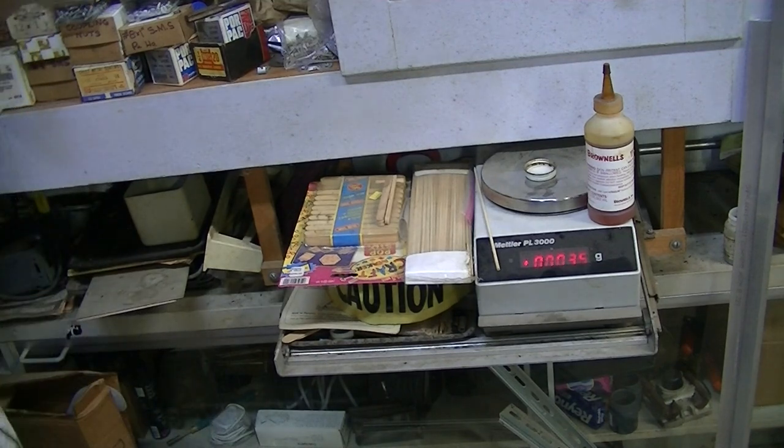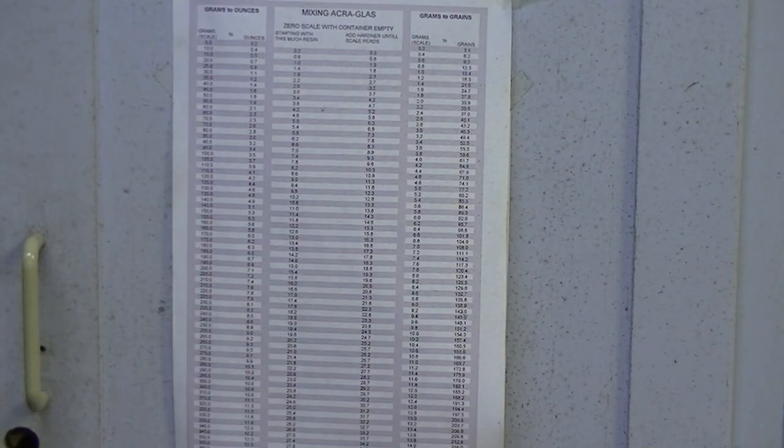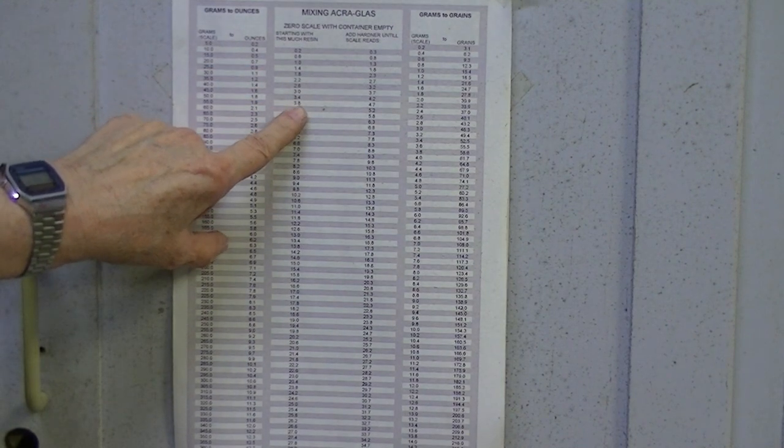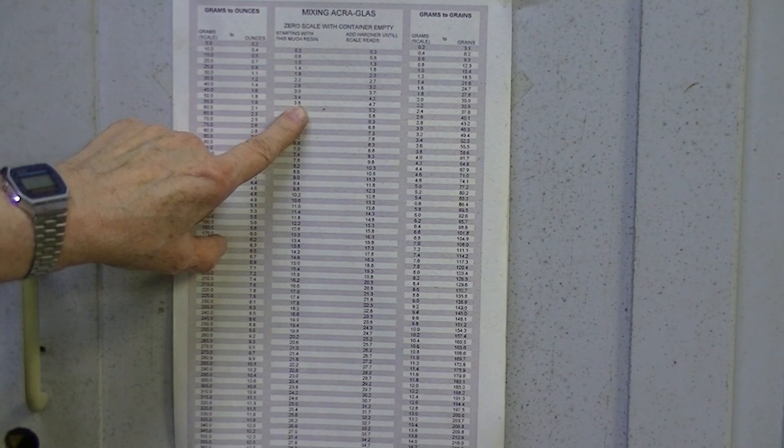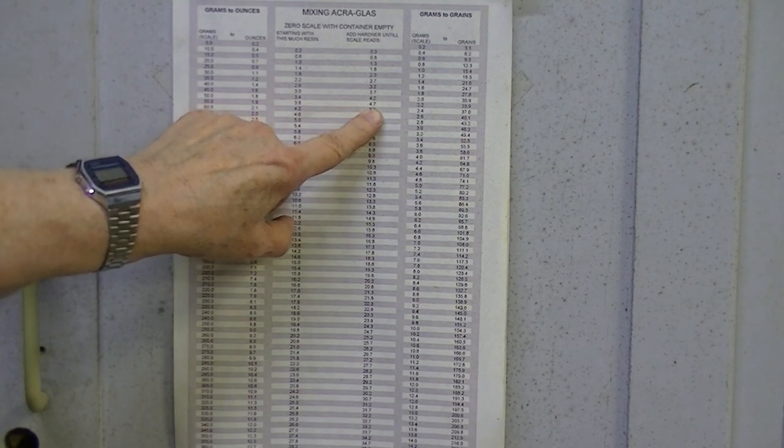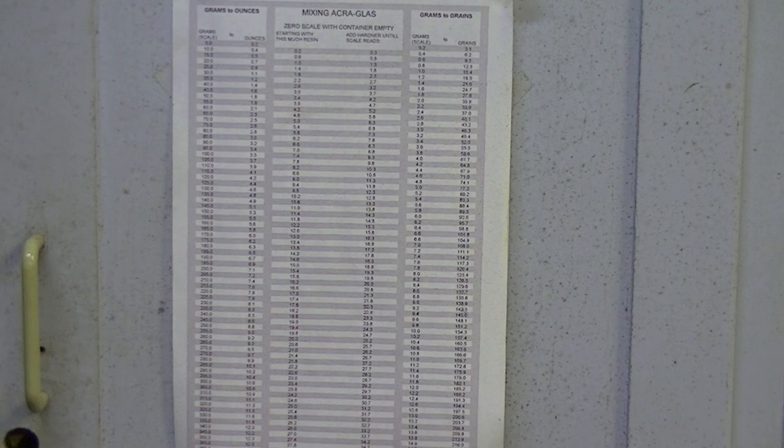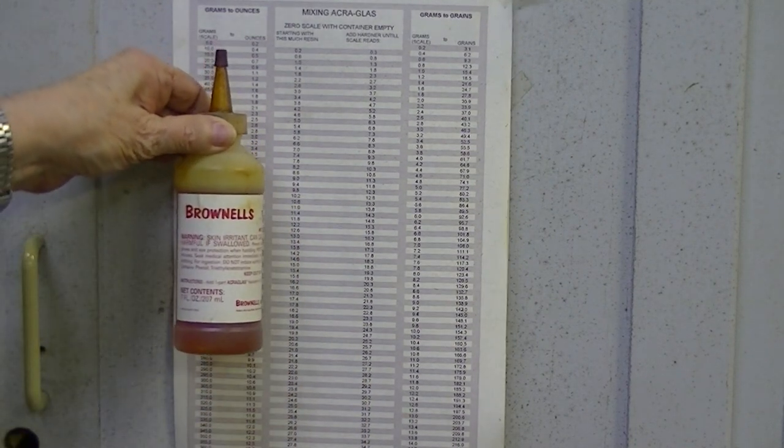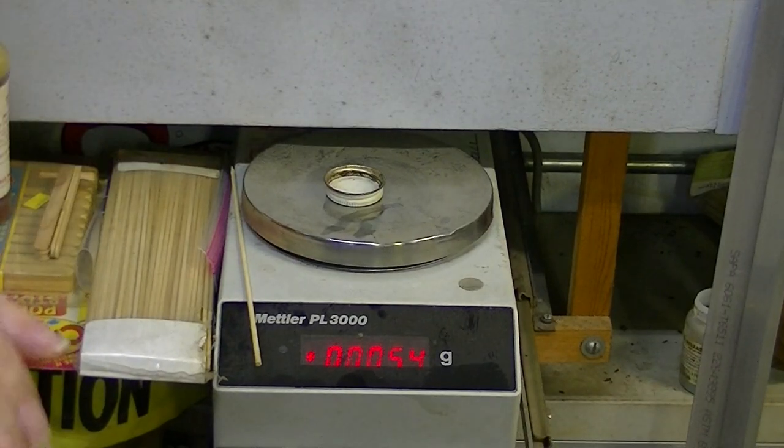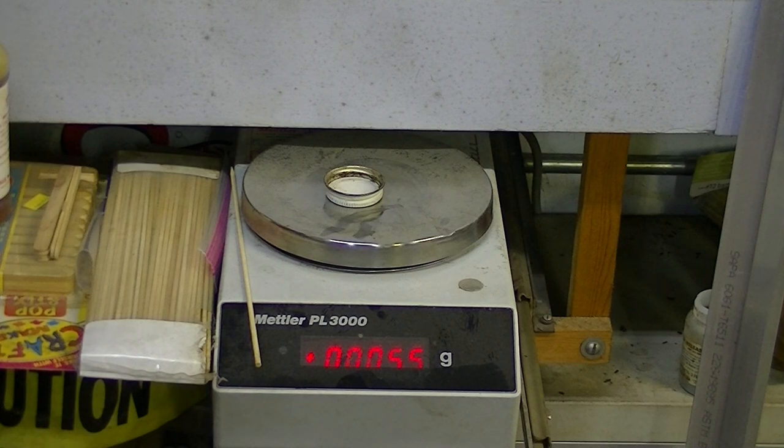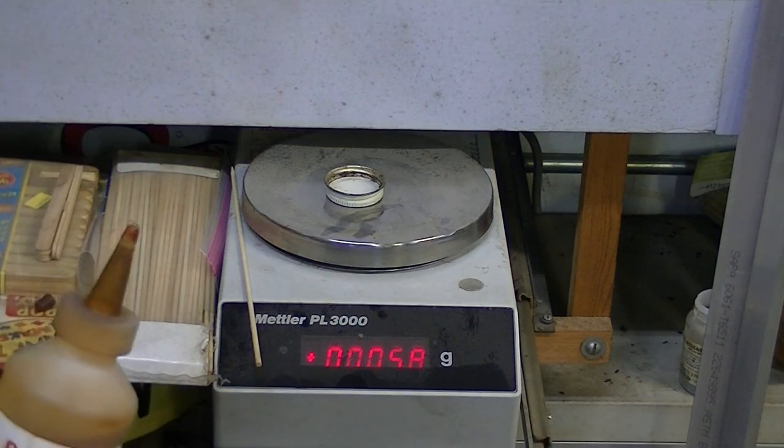I have a chart. According to this chart, if I have 3.6 grams of resin, I need to bring it up to a total of 4.7 by adding the hardener. Better check my numbers.